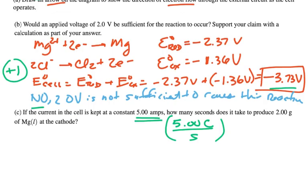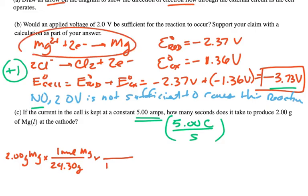We're going to start over. We have two grams magnesium metal, and we know if we have grams we can change that to moles, so 24.30 grams of magnesium is one mole of magnesium. And because of the equation we have up here, we know that one mole of magnesium is going to require two moles of electrons.